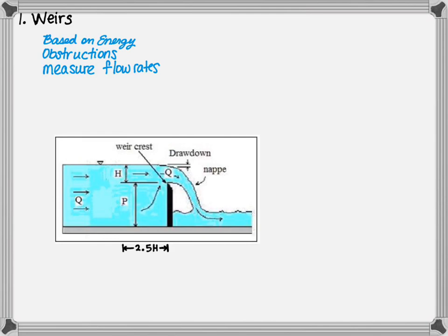The velocity of the approach is equal to the discharge Q divided by the cross-sectional area of the flow at a head measuring station, which is 2.5 times H upstream of the weir. This location is chosen because it is not affected by the drawdown effect.